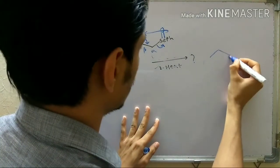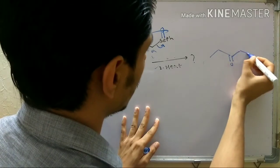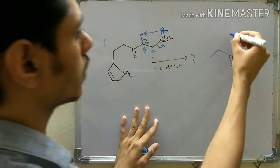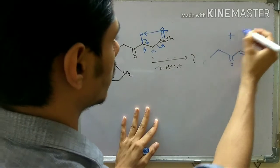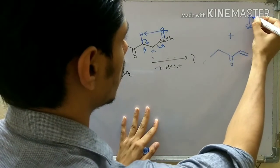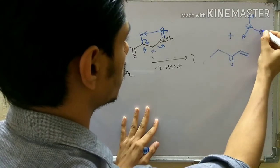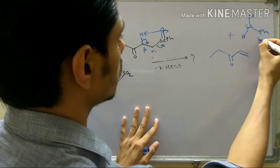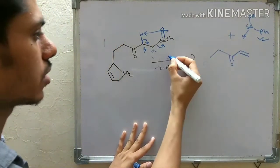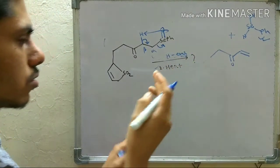In this ene reaction, a double bond forms here, and the –SeOH fragment leaves. So this is the ene reaction — that is the first concept you learn from this problem.